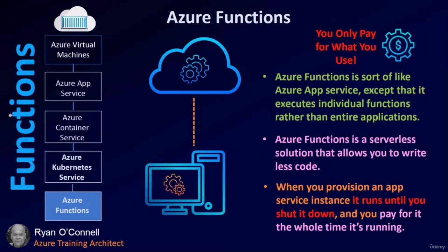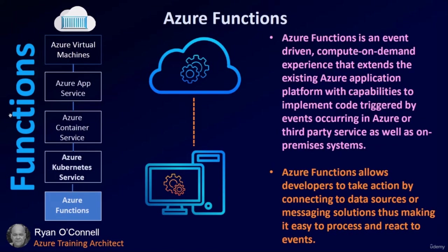Azure Functions — you pay for only what you use. Azure Functions is similar to an Azure App Service except it executes individual functions rather than entire applications. It's a serverless solution that allows you to write less code. When you provision an App Service instance, it runs until you shut it down and you pay for it the whole time. Azure Functions are event-driven, compute-on-demand, extending existing Azure application platforms by triggering code from events in Azure, third-party services, or on-prem systems, making it easy to process and react to events.